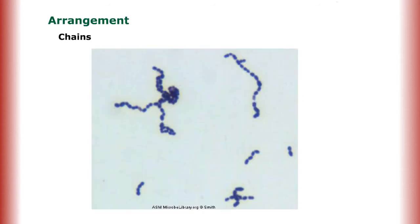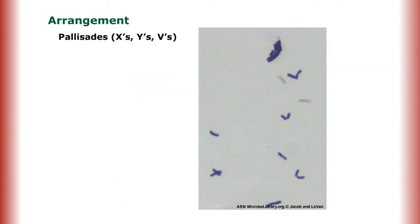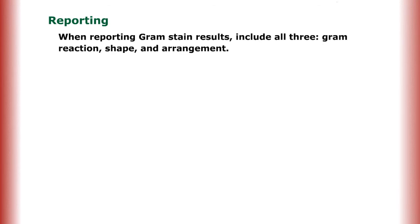Arrangement: Cells may be arranged in chains, clusters, or palisades, X's, Y's, and V's. Now, let's discuss how to report gram stain results. When reporting gram stain results, include all three: gram reaction, shape, and arrangement.